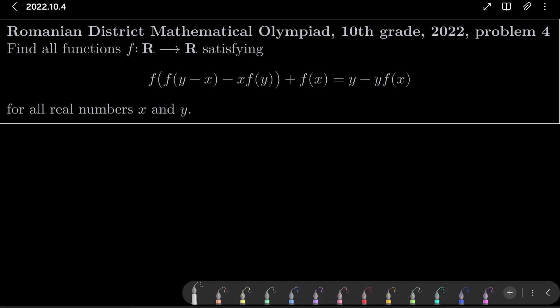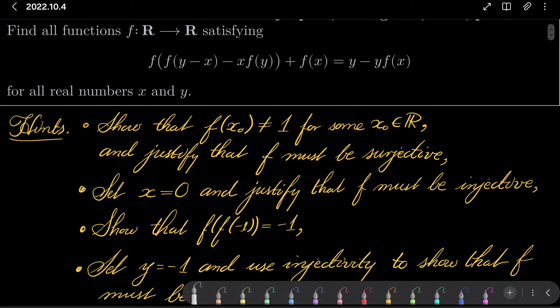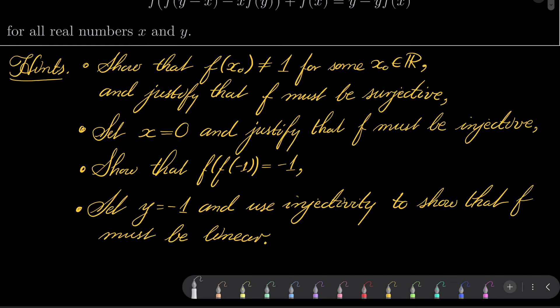Here are my hints for this functional equation. First, show that our function cannot be constantly 1, so f(x₀) ≠ 1 for some real number x₀, and show that this means our function f must be surjective. Then set x equal to 0 and justify that our function must be injective. Also note that f(f(-1)) = -1. And finally, set y to be -1 and use injectivity to show that our function must be linear. Give this problem a try and I will see you in just a minute.